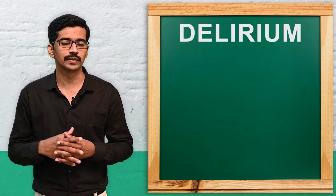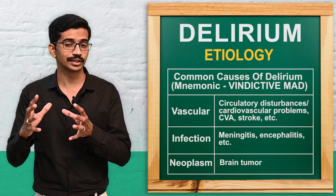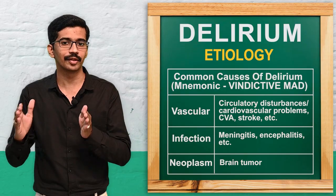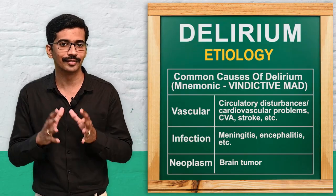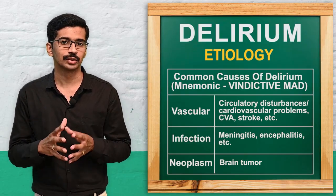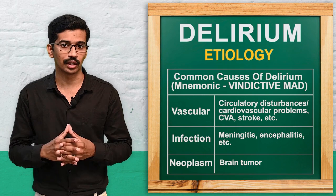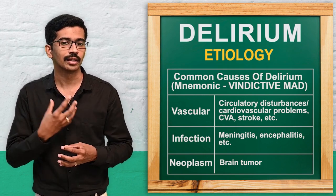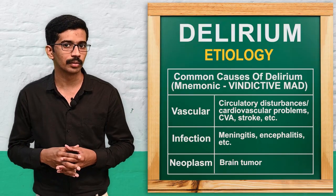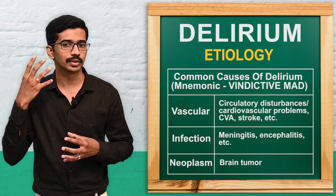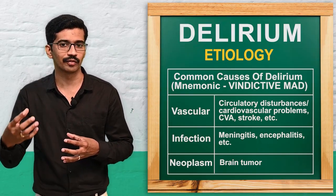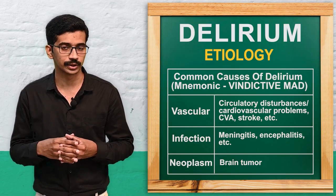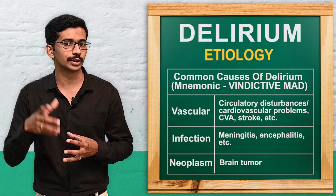Now we move to the etiological factors or causes of delirium. The causes can be abbreviated as VINDICTIVE MAD. V stands for vascular causes — problems with cardiovascular issues, any cardiac problem, or problems with the brain like a stroke or cerebrovascular accident. I stands for infection — any infections of the brain such as meningitis or encephalitis.